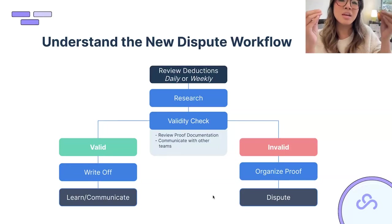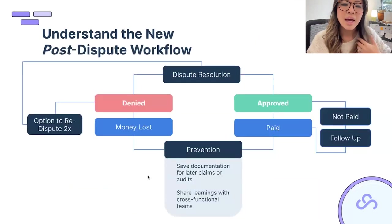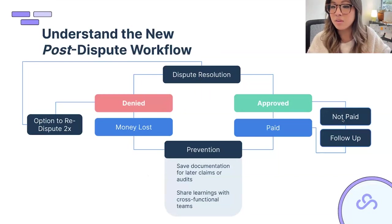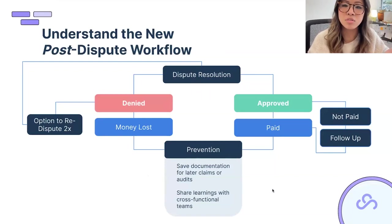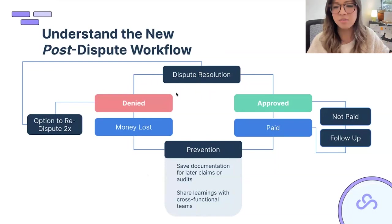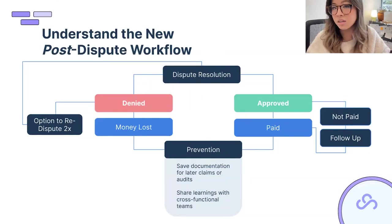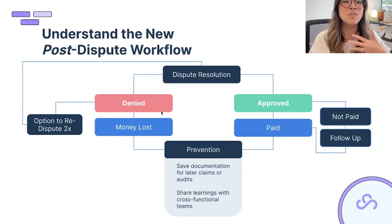If deductions are invalid, make sure your proof is easy to access. Many teams have a filing cabinet in a warehouse corner stacked with PODs and BOLs with no efficient system to find and match them to claims. Once you get a resolution, if approved and not paid, follow up — it's rare but happens. If denied, you have the option to re-dispute twice. Do you have a process to review denials? Sometimes you'll get a false negative that's worth re-disputing.